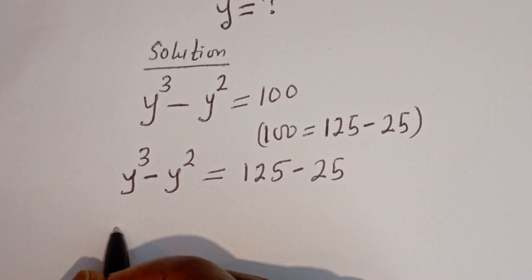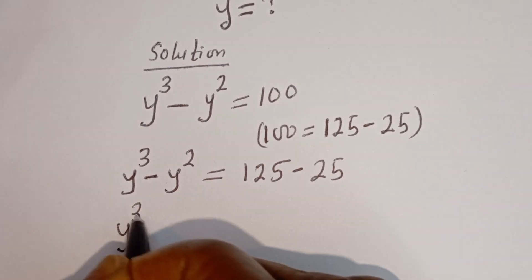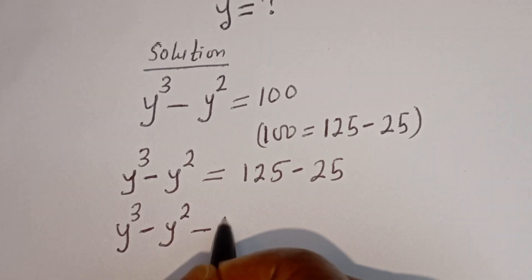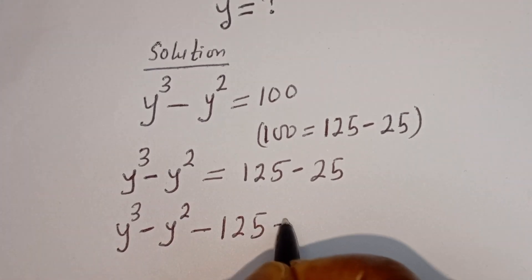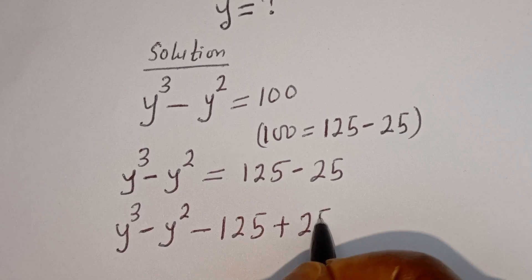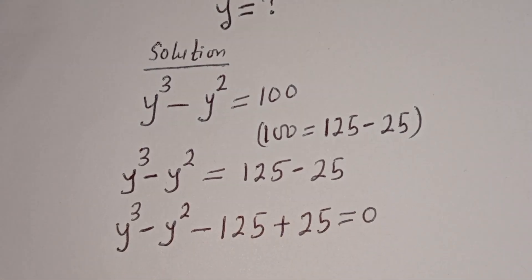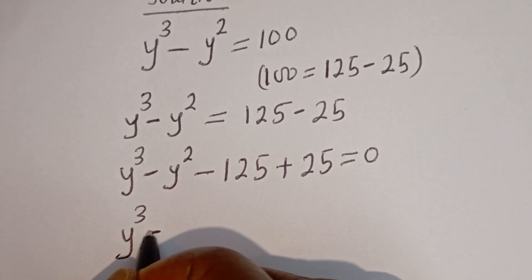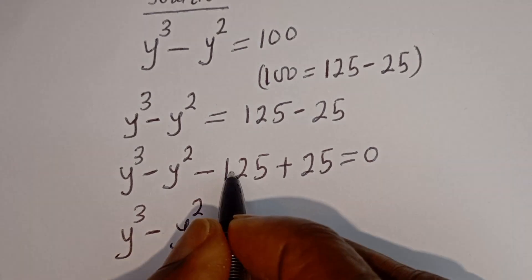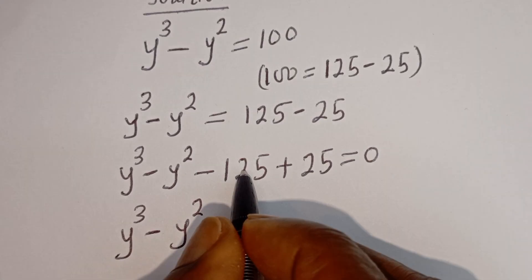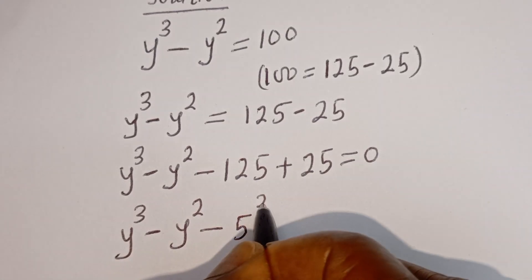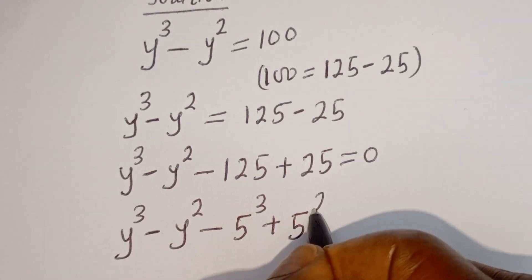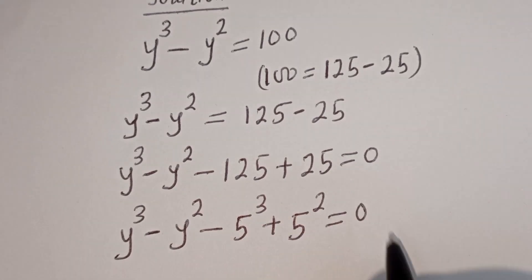Then y to the power of three minus y squared, minus 125 plus 25, is equal to 0. This 125 can be written as 5 to the power of three, and this 25 can be written as 5 squared, so the equation becomes equal to 0.